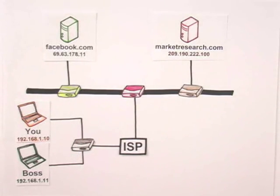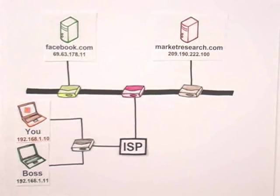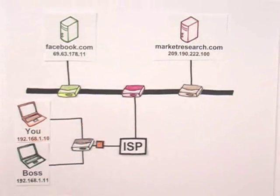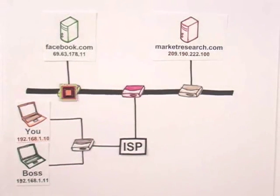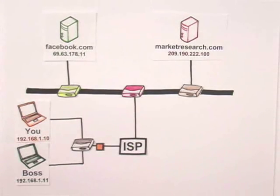Every time you visit a website, upwards of 10 to 15 routers may help your packets find their way to and from your computer. Imagine each packet as a piece of candy wrapped in several layers. The first layer is your computer's IP address. Your computer sends the packet to the first router, which adds its own IP address. Each time the packet reaches a new router, another layer is added until it reaches the server. Then when the server sends back information, it creates packets with an identical wrapping. As the packet makes its way over the Internet back to your computer, each router unwraps a layer to discover where to send the packet next, until it reaches your computer and not your boss's.